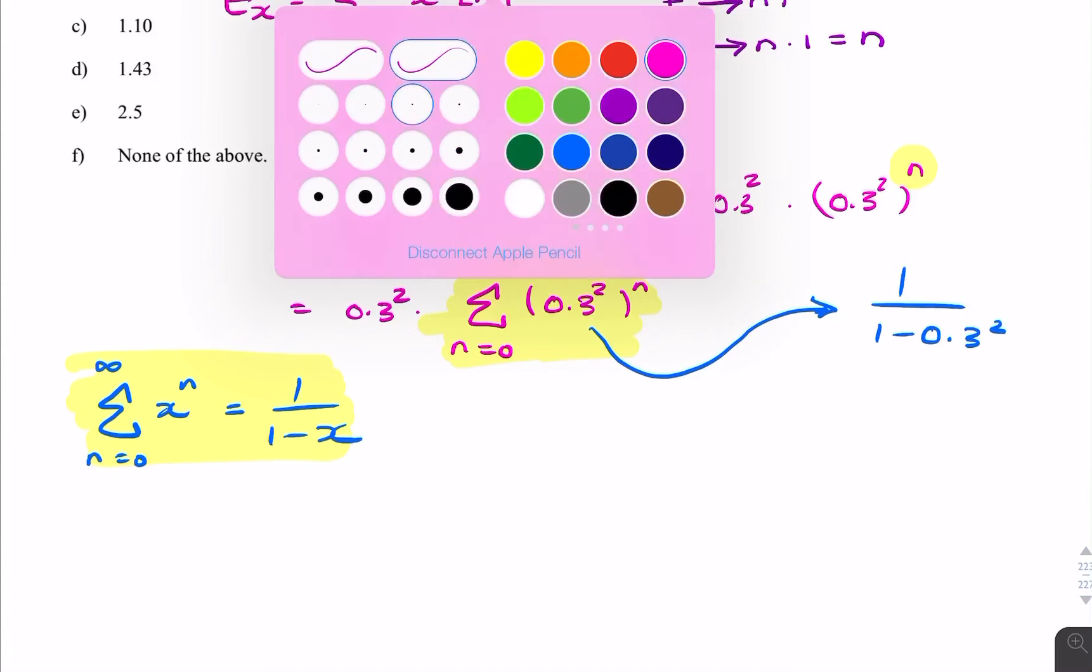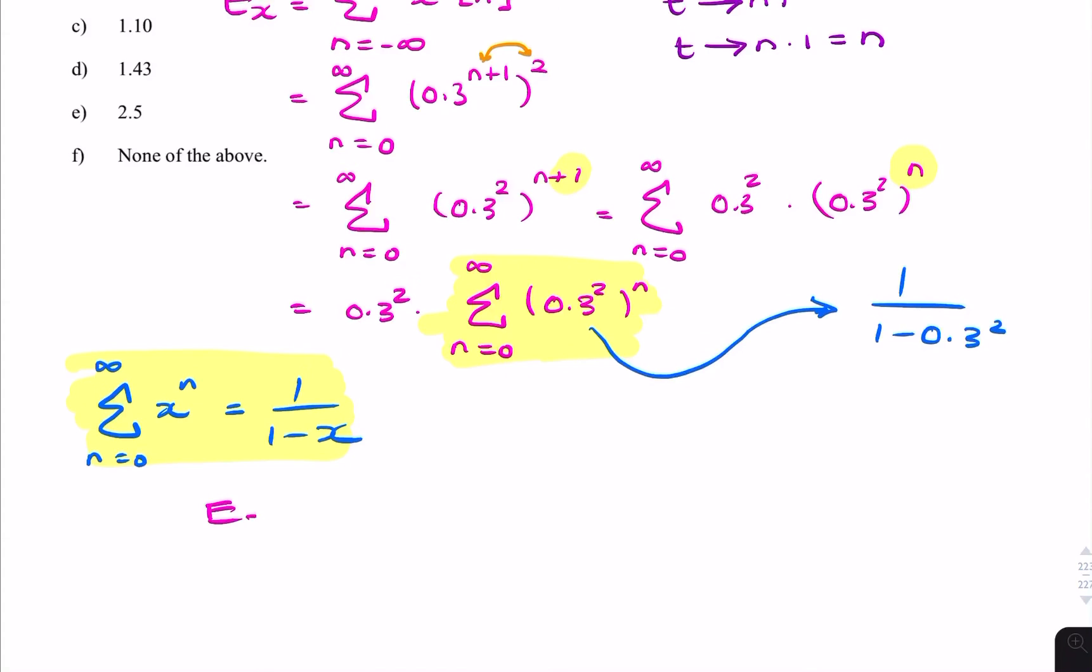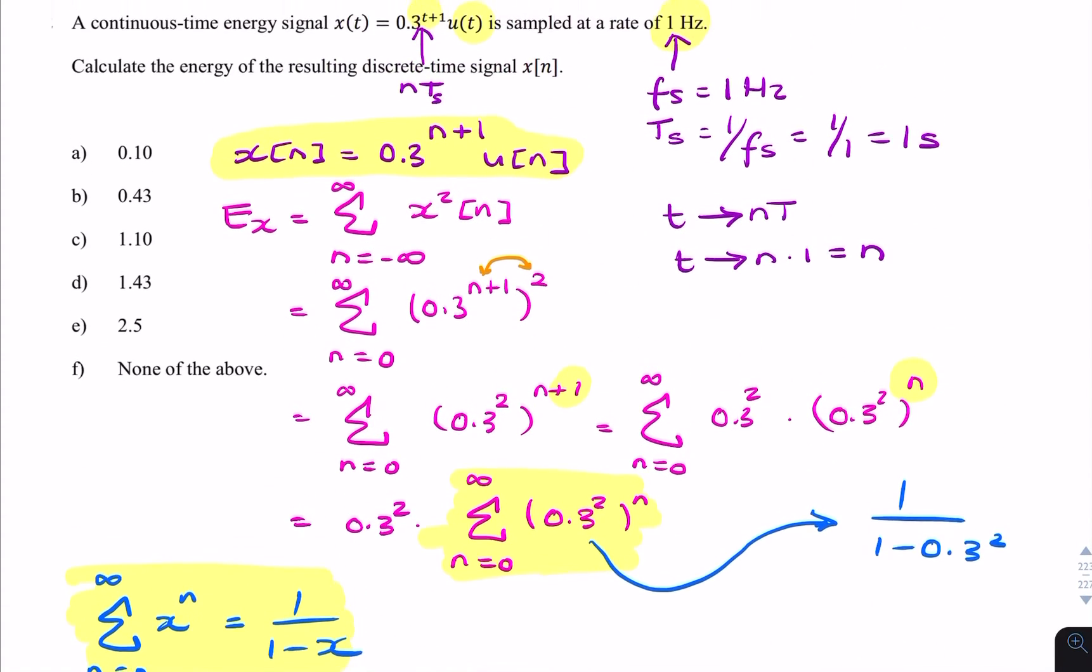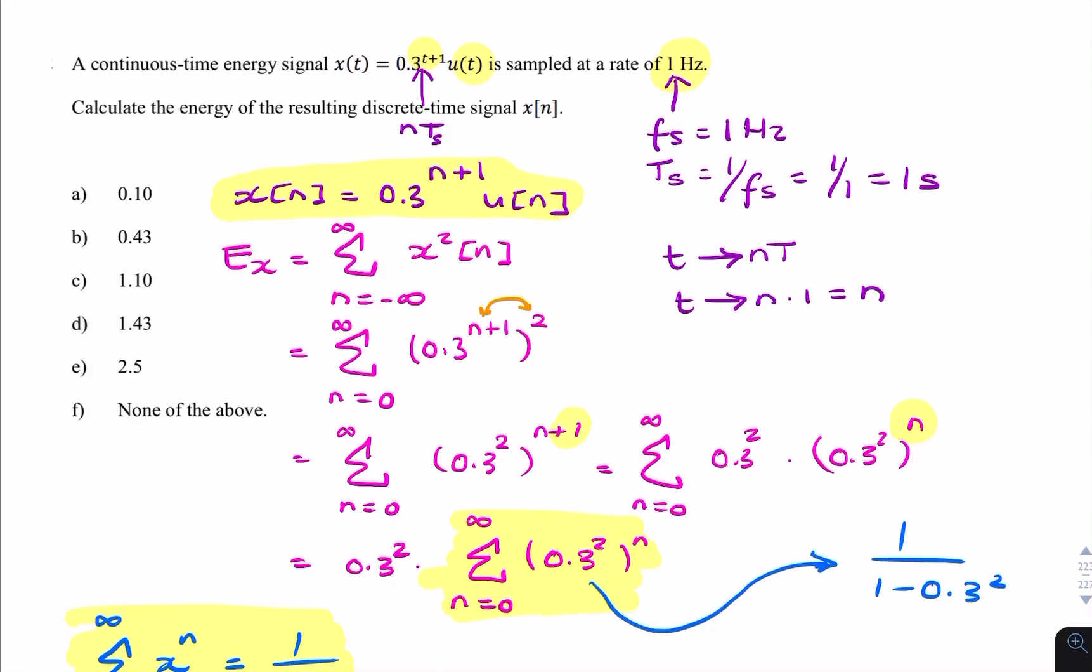So the final answer here, Ex equals 0.3 squared times 1 over 1 minus 0.3 squared. If you put that in the calculator, you get 0.0989, which is approximately 0.1. So that's the energy we're after in this question. So it's a multiple choice question. That's your final answer.